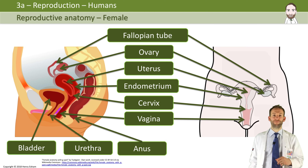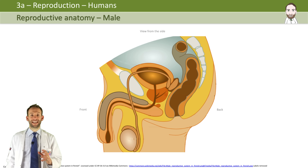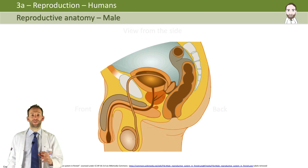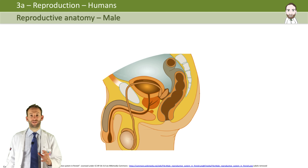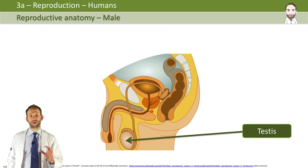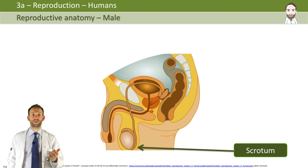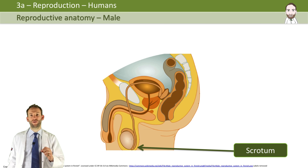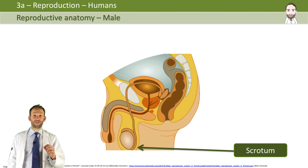Looking at the male anatomy, you've got the testes, which is where sperm are produced. You've got the scrotum, which holds the testes outside of the body, which actually keeps them a little bit cooler for sperm production — the ideal temperature for sperm to be produced.